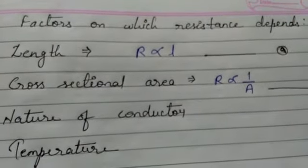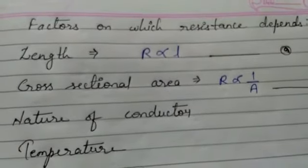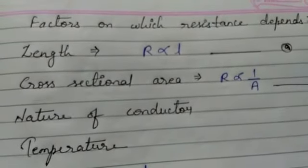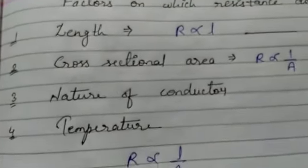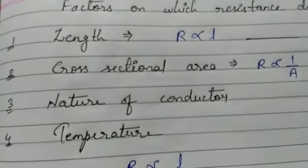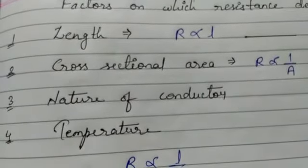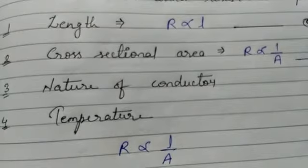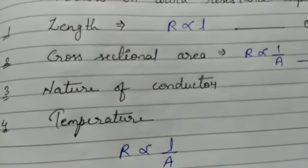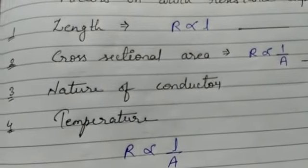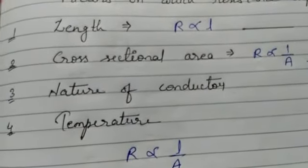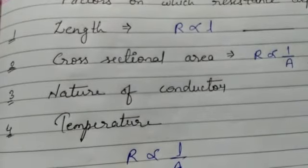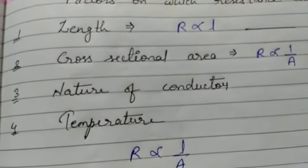From the formula of resistance, we know it is directly proportional to voltage and inversely proportional to current. Now let's see how resistance depends on some physical factors. First is length — resistance is directly proportional to length. As the length of the conductor increases, resistance also increases. Second is cross-sectional area — R is inversely proportional to cross-sectional area; if area increases, resistance decreases. Third is the nature of the conductor — the material it is made of, its density, etc., also affect resistance.